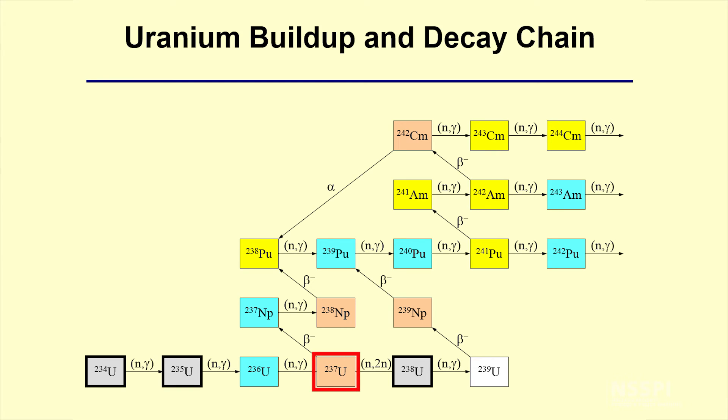U-237 could beta decay, which is releasing an electron, to produce neptunium-237. Neptunium-237 is a different element than uranium. Neptunium-237 is of the element neptunium.